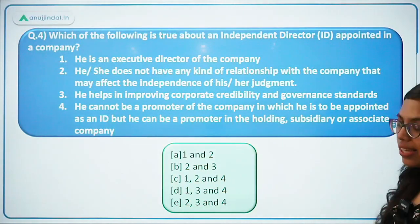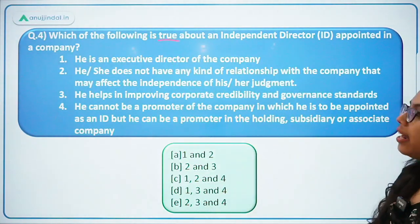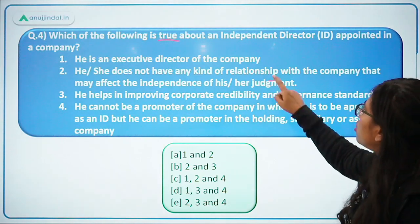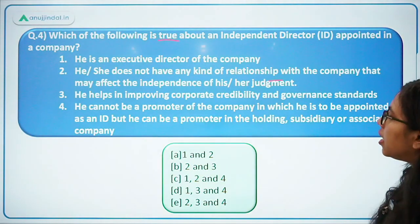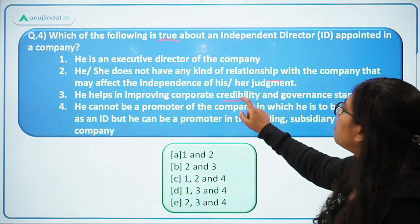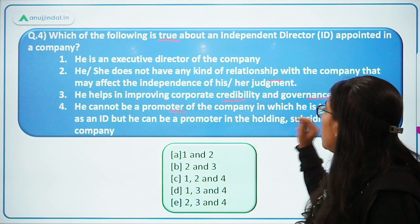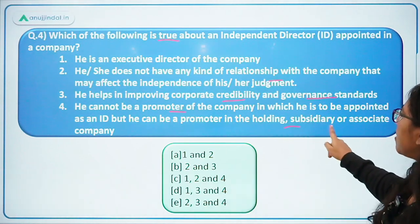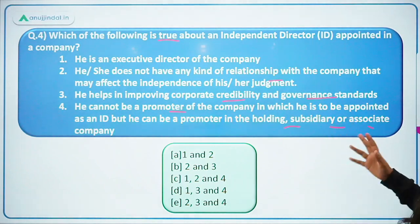Moving forward to the next question: which of the following is true about independent directors appointed in a company? First, he is an executive director of the company. Second, he or she does not have any kind of relationship with the company that may affect the independence of his or her judgment. Third, he helps in improving corporate credibility and governance standards. Fourth, he cannot be a promoter of the company in which he is to be appointed as ID, but he can be a promoter in the holding, subsidiary, or associate company.